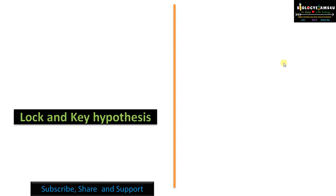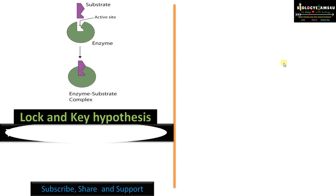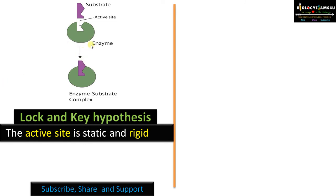Difference number two regarding the active site: In Lock and Key hypothesis, the active site is considered as very rigid and static so that a substrate with a complementary matching shape can bind to the active site.